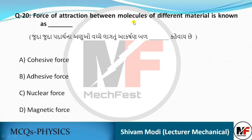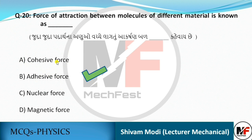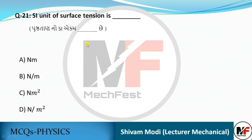Force of attraction between molecules of different materials is known as adhesive force. If it is between molecules of the same substance, it is called cohesive force. The SI unit of surface tension is Newton per meter.